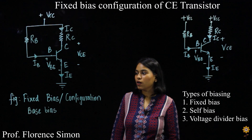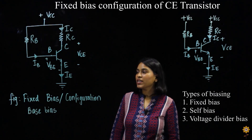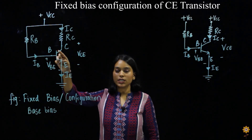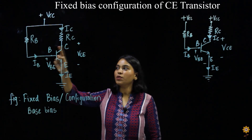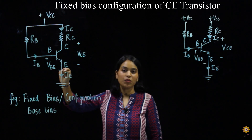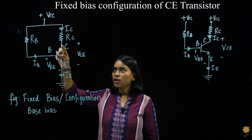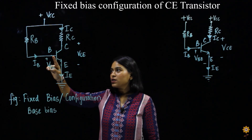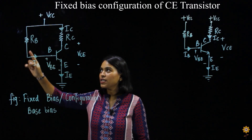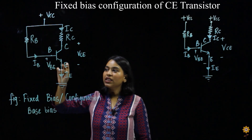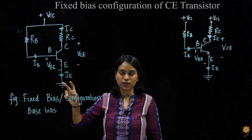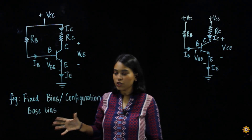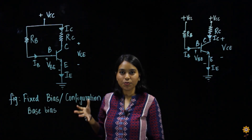In fixed bias we can see that this is a BJT which has three terminals: collector terminal, base terminal, and emitter terminal. Across the collector terminal we have a resistor RC connected in series. Across the base terminal there is a resistor RB connected, but in the emitter terminal there is no resistor present. This configuration is also called base bias.